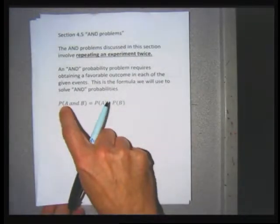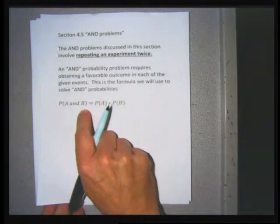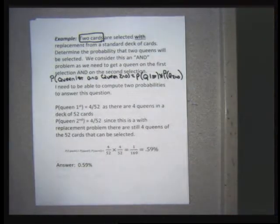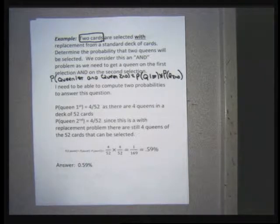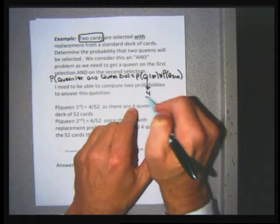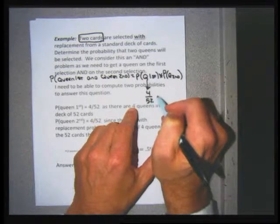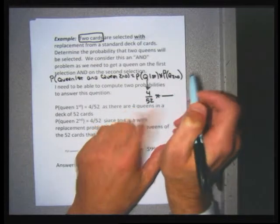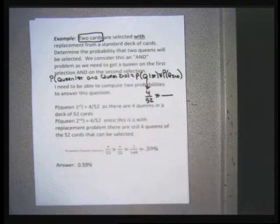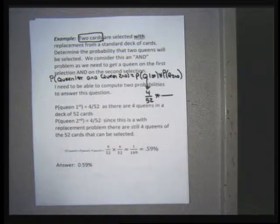The probability of A and B equals the probability of getting a queen first times the probability of getting a queen second. A deck of cards has four queens, so the probability of getting a queen first is 4 over 52. For the next probability, since I'm putting the card back, there are still 52 cards in the deck and still 4 queens, so it's going to be another 4 over 52.